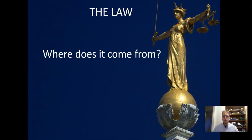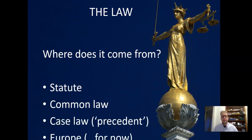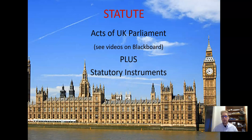Let's have a think about where the law comes from — a number of places. So statute: those are laws which are passed by parliament. We have common law and case law — we'll talk about those shortly — and we have Europe for now. Many of you will have studied this previously, but acts of parliament are laws passed by parliament; that's what MPs are doing all the time, passing laws. They can also pass what they call statutory instruments, which are a power the government has to pass rules rather than laws. But the key thing is acts of parliament, known as statute.